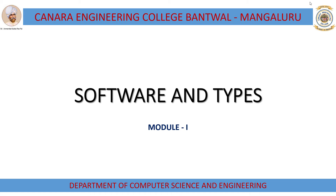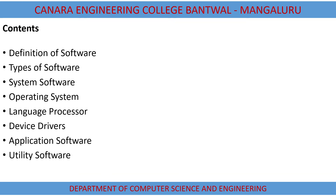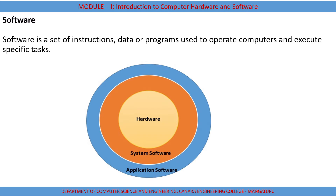Hello everyone. Today we will see about software and its types. The contents we are going to cover in this session are: definition of software, types of software, system software, operating system, language processor, device drivers, application software, and utility software. First, we will see what is software.